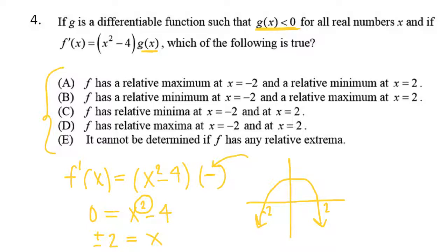Let's see which answer is true. A says f has a relative maximum at x equals negative 2 and a relative minimum at x equals 2. I'd pick on x equals 2 — they say a relative minimum, but really I have a relative maximum there because my derivative is going from positive to negative. So it can't be A. Notice we have relative maximum in B. Checking B: a relative minimum at negative 2. Yes, we do have a relative minimum — going from negative to positive. So the correct answer is B.